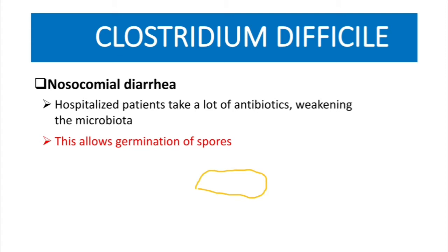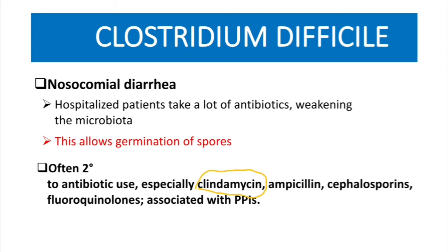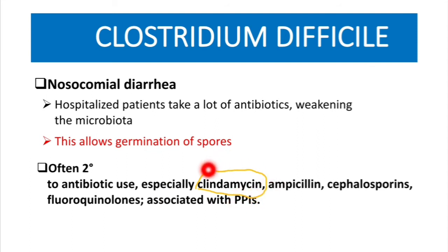Examples of antibiotics associated with C. diff include clindamycin, ampicillin, cephalosporins, and fluoroquinolones. It is also associated with proton pump inhibitors. Importantly, clindamycin is number one on that list — remember that clindamycin is number one.